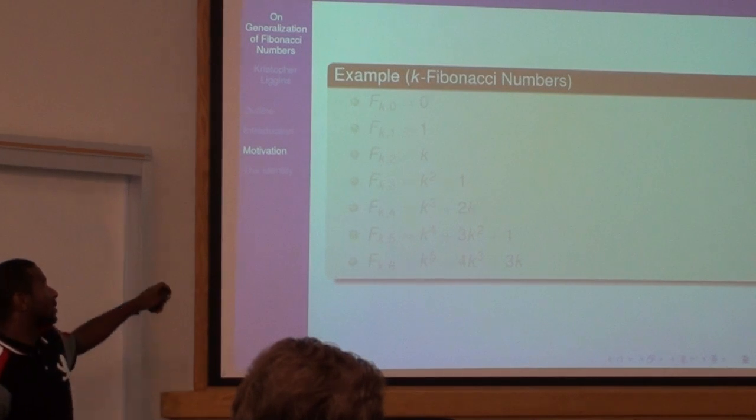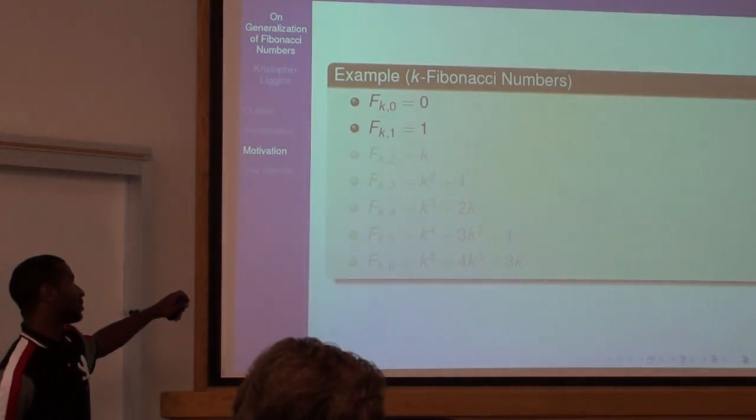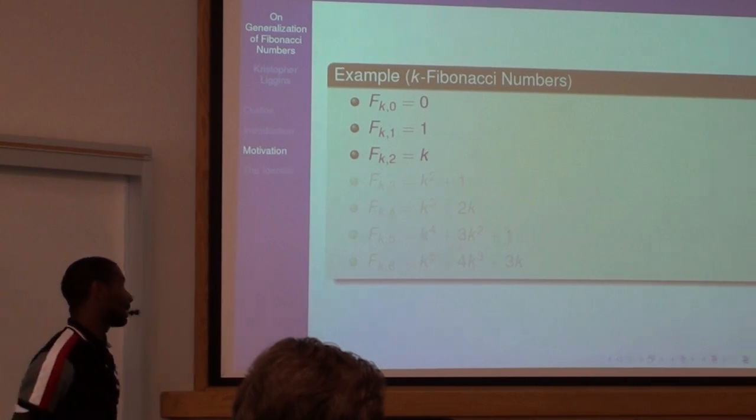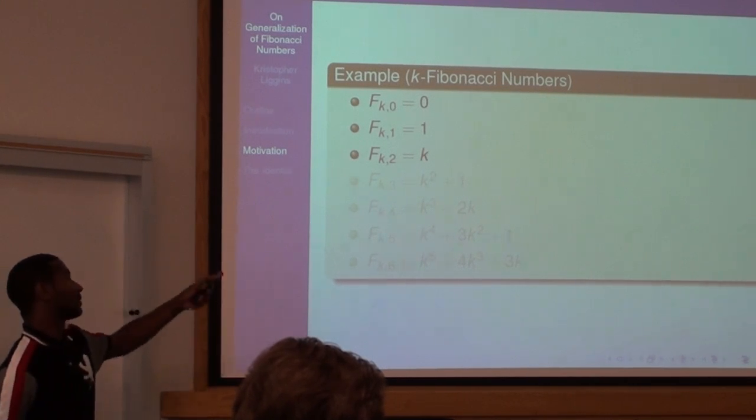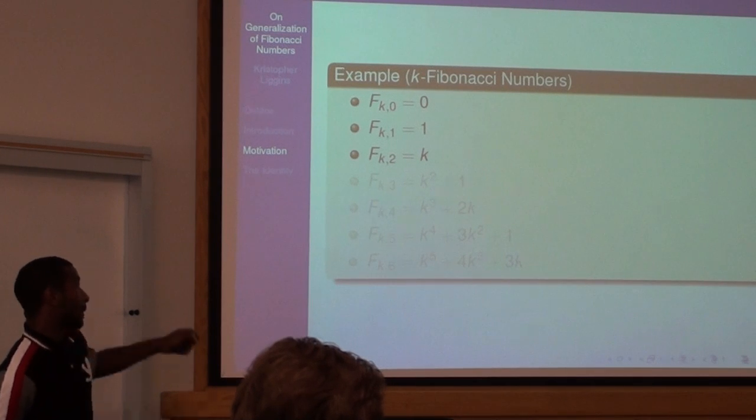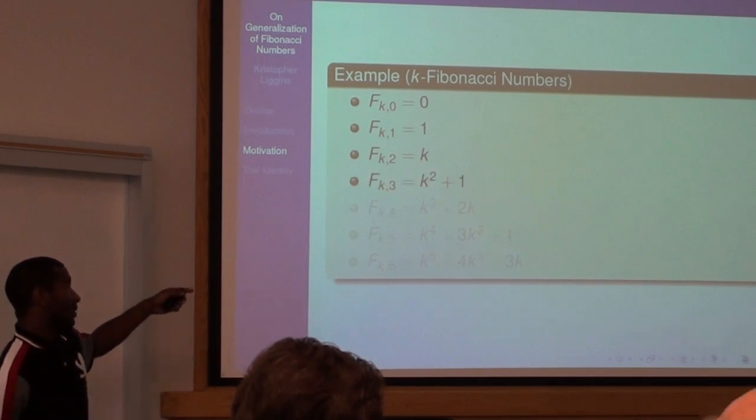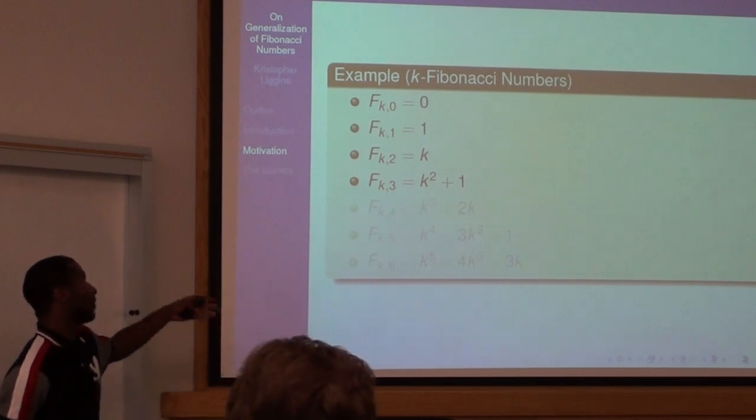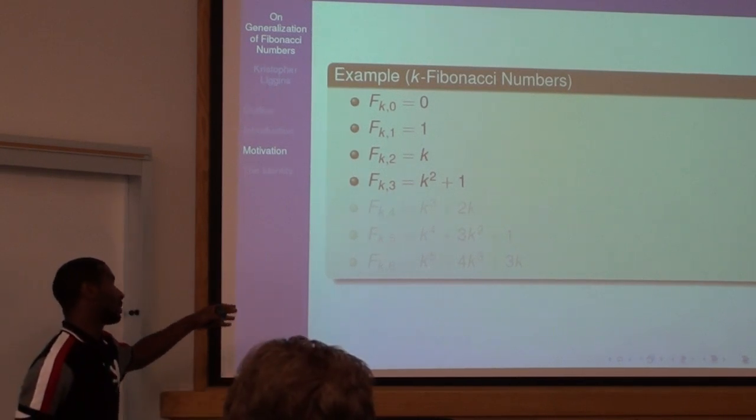This is how the sequence, if you start with zero and one, this is how the sequence will look. Because you multiply k times one plus zero would be k.